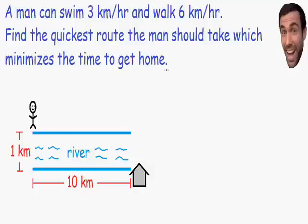Let's take a look at all of the options that this man can choose from. One option is that he could swim the least amount of time possible, which means he would swim directly across the river, and then as soon as he reaches the shore, he can walk the rest of the way to his house. This is indeed a pretty good option, since he walks so much faster than he swims.